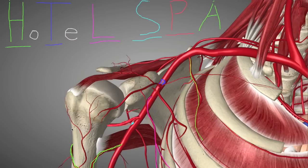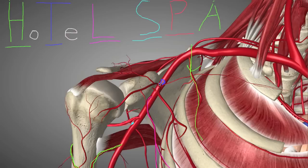Not too bad — only six branches. When you go in order of HOTEL SPA, you can see they exit the artery in order: H, T, L, S, P, A. We start with the Highest Thoracic Artery — the first branch off the axillary artery. Then the tree trunk-looking Thoracocromial Trunk Artery with four branches of its own. Then the Lateral Thoracic Artery on the lateral side of the thorax. The Subscapular Artery moves posteriorly to supply muscles of the back. Then the Posterior and Anterior Humeral Circumflex Arteries.